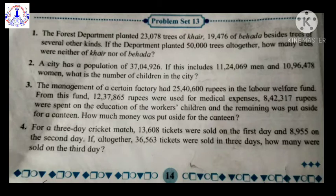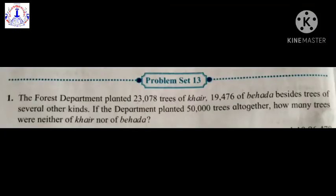All of you see sum number 1. The forest department planted 23,078 trees of Kher and 19,476 of Behera, besides trees of several other kinds. If the department planted 50,000 trees altogether, how many trees were neither of Kher nor of Behera?